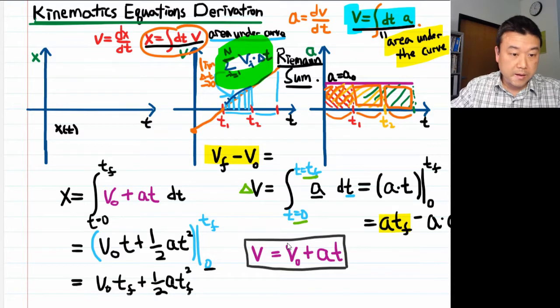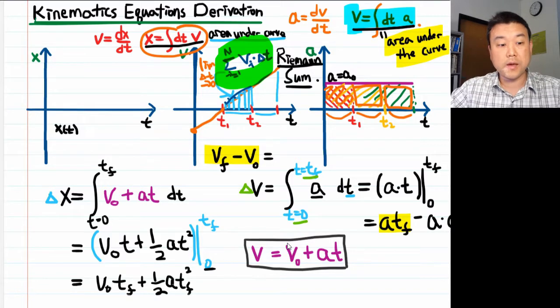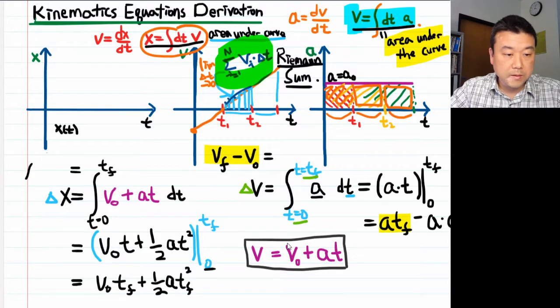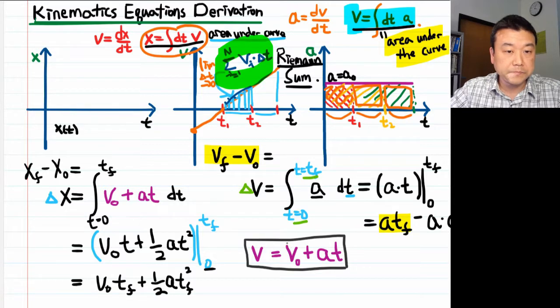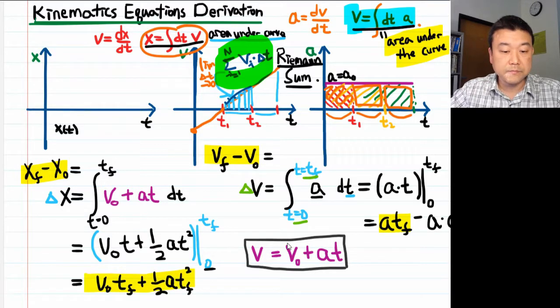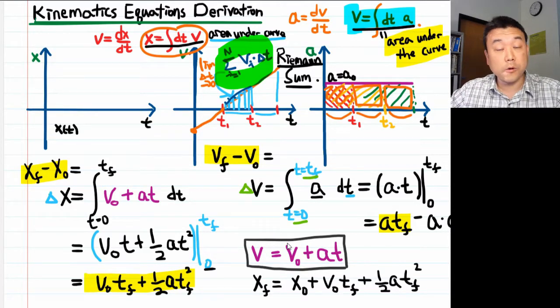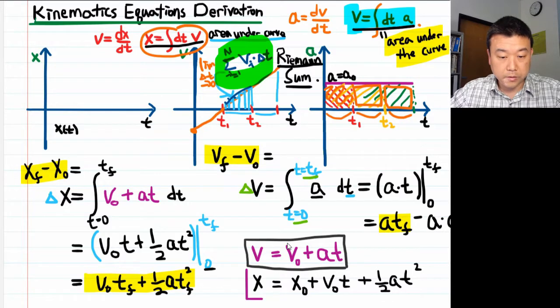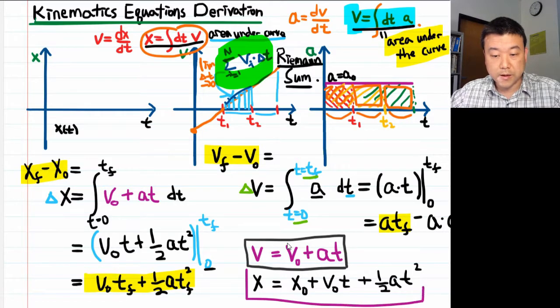And don't forget the left-hand side isn't actually x when you do it this way, it's the change in x. So what it should be is x final minus x initial. Take this left-hand side and this right-hand side, solve it for x final and for presentation get rid of this final subscript, and that's the kinematics formula for the position as a function of time.